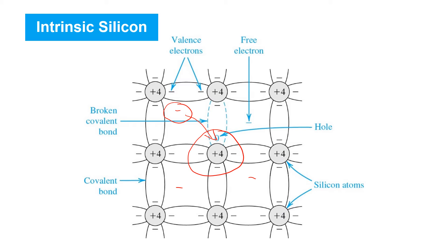Recombination will occur at a rate that depends on the thermal motion of the charge carriers in the semiconductor. So if there are many, many extra free electrons introduced, some will recombine with holes. The free electron concentration will drop and so will the hole concentration, and eventually they'll arrive at a new steady state that is governed by this equation.